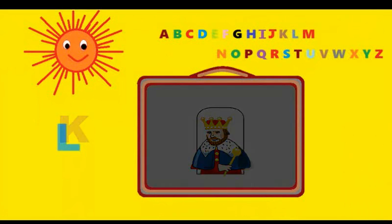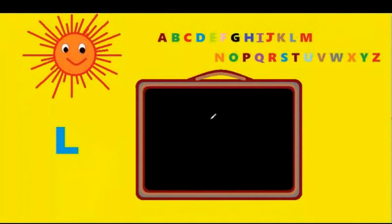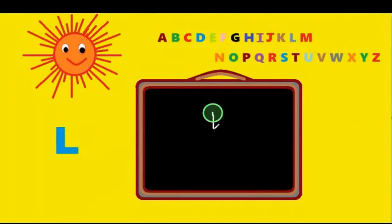Now let's draw L. L is very easy. You have to come down the street and across the street. A standing line and a sleeping line. That's L. L is for lion.